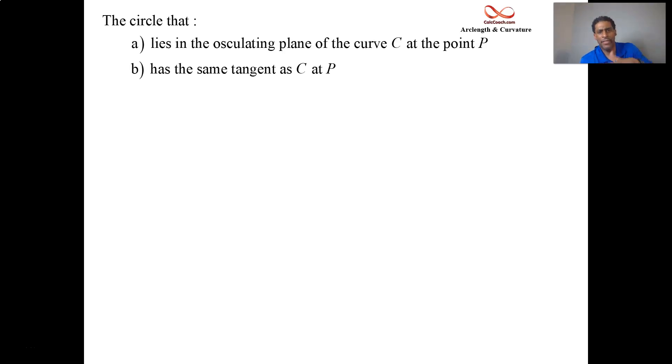And what happens with it is that the circle will always lie on the concave side of the curve. The unit normal vector is going to point towards the center of the circle. Did I say?